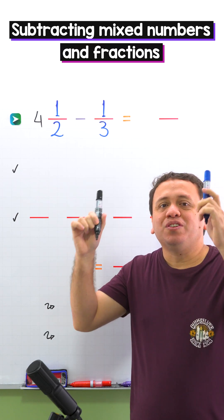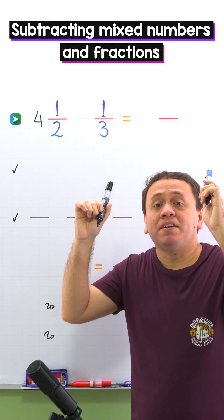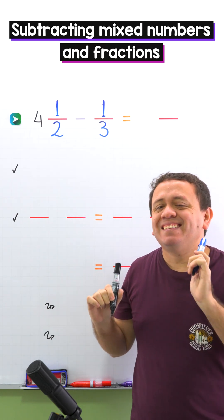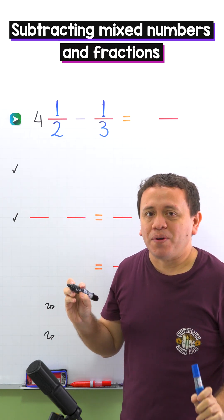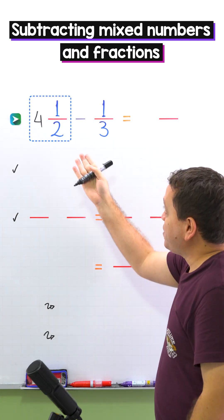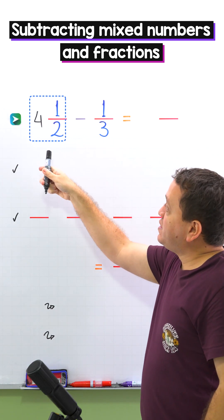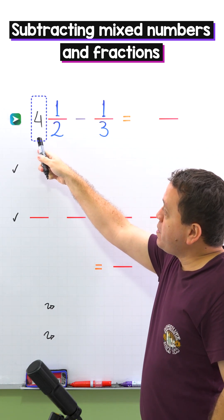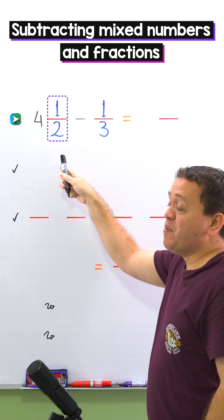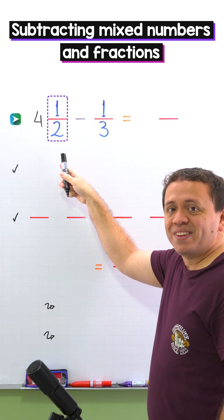Today we're going to take a look at how to subtract mixed numbers and fractions. Let's start with a quick review. A mixed number like this one is the sum of a whole number and a proper fraction.